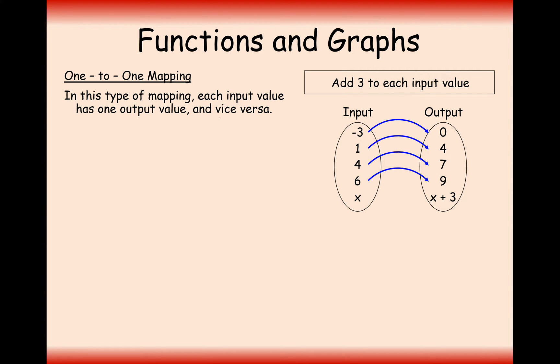It's easy to see how the vice versa bit of this will work as well. Each output value will have one specific input value that it will go back to. You would work that out by subtracting three from your output values to go back.